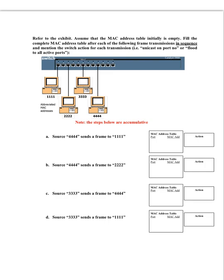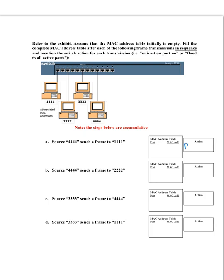These steps are accumulative, meaning each step takes into consideration the MAC table after performing the previous step. In Event 1, source 4:4:4:4 wants to send to 1:1:1:1. The MAC table is initially empty, so the switch looks up 1:1:1:1 and finds no entry — the action is to flood to all active ports.